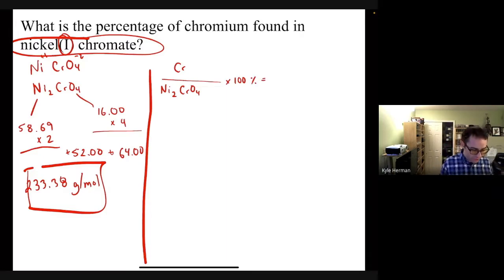So we need to substitute some numbers for this. So the chromium number would be whatever it is off the periodic table, which is 52.00 grams per mole. And then the whole is going to be what we just calculated, that 233.38 grams per mole. And then we multiply that by 100, and the unit is percent.